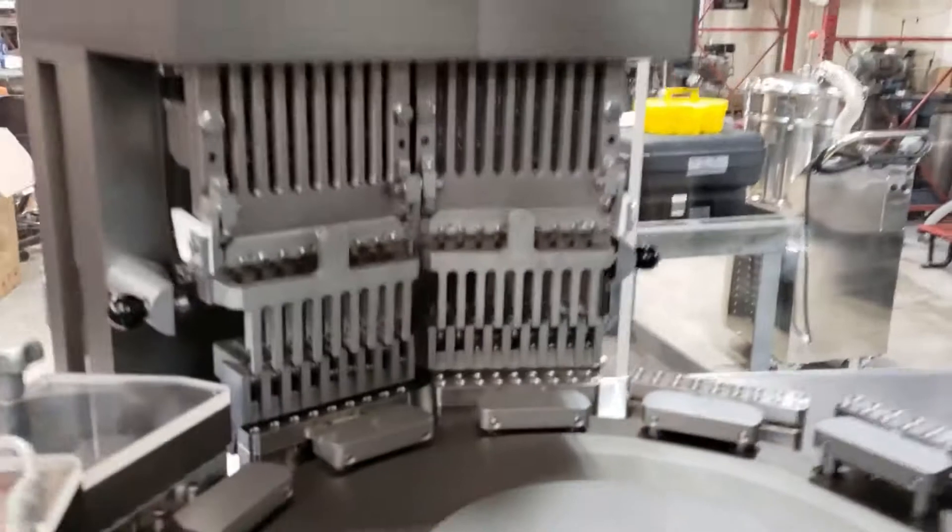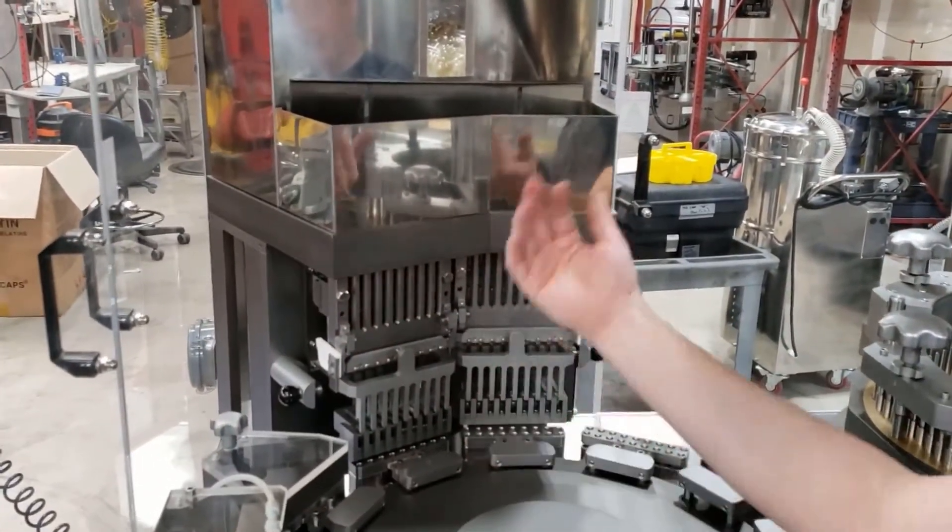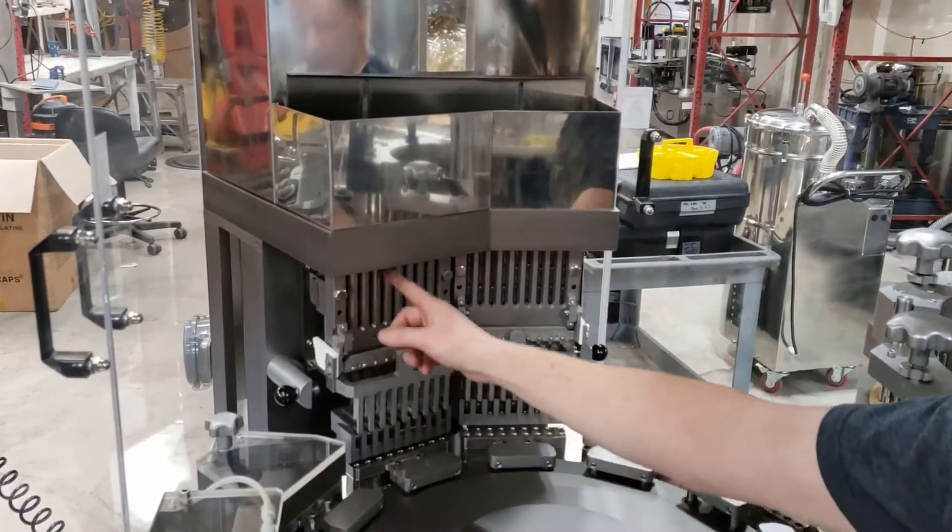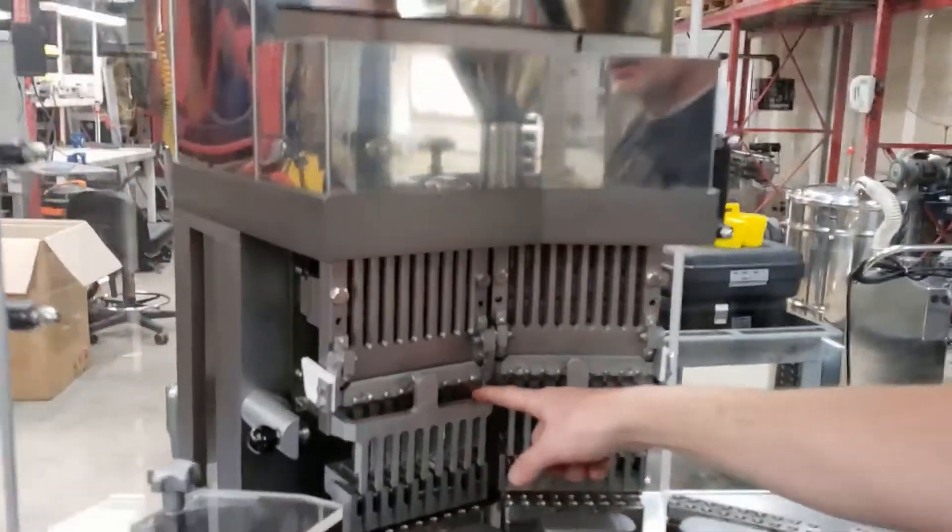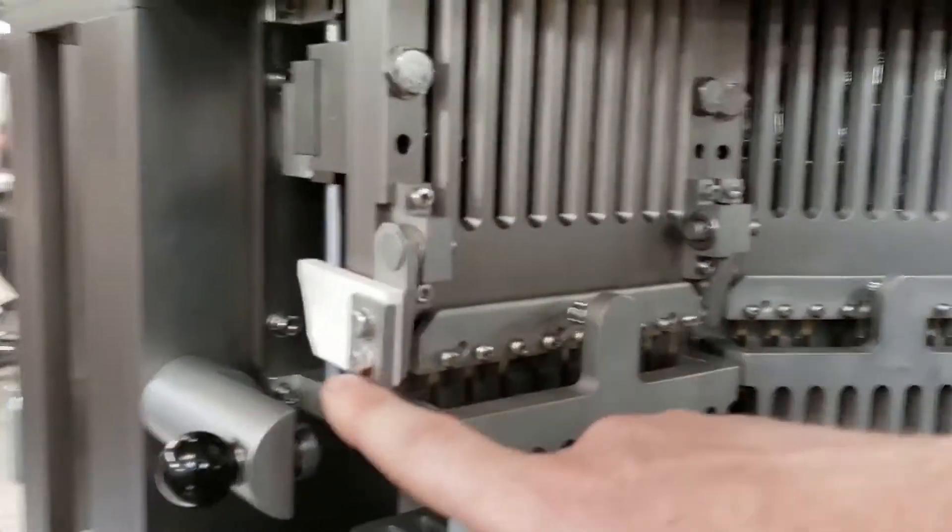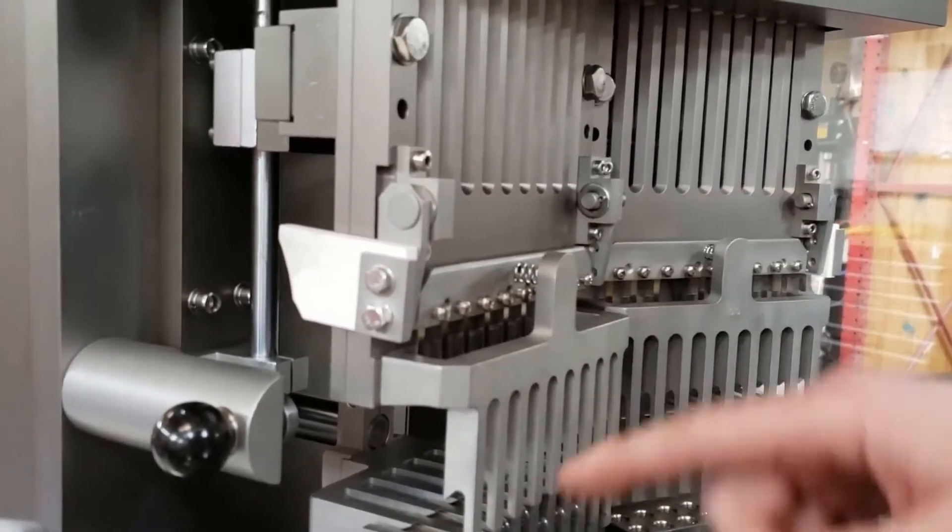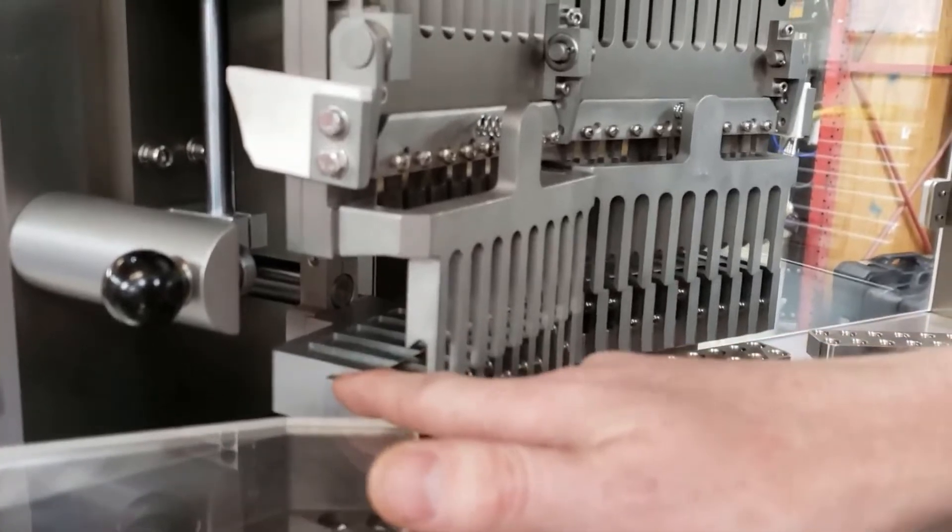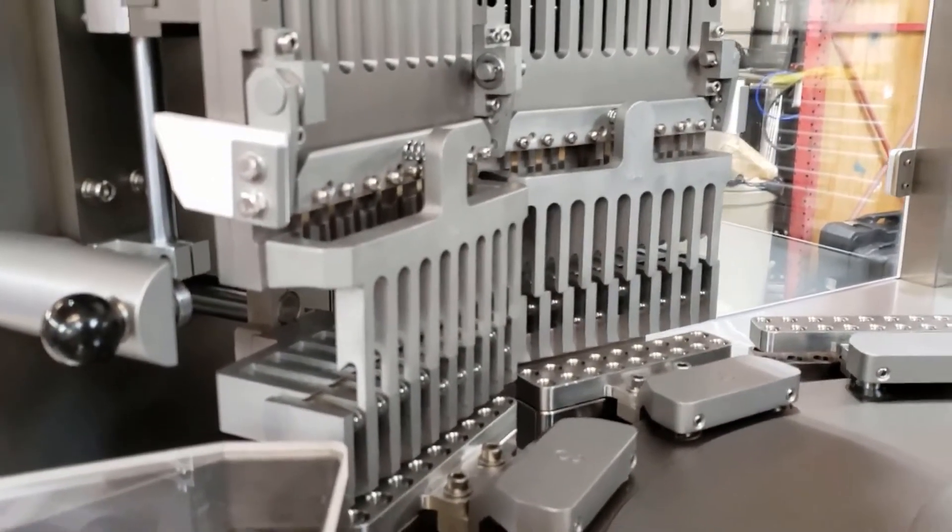So how it works is, these are what we call the magazines. They're going to reciprocate up and down and the capsules are going to fall down these channels. You can see down here we have little clips that are going to stop them from continuing to fall. But as these magazines come down, they're going to hit the trip cam here. That gate right here is going to open up and it's going to release a capsule down into our sorting block here.